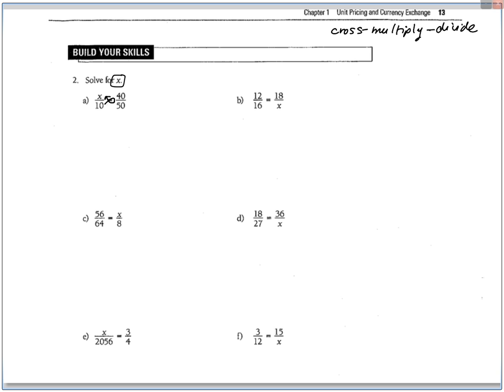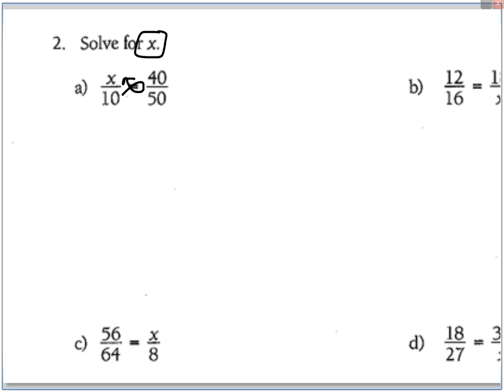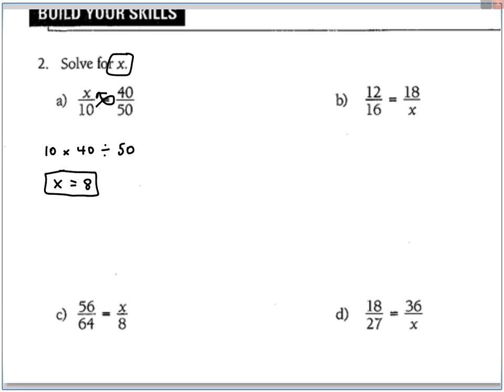And what we do is we draw a little picture on the equation to help us. So I drew like a little fish symbol. And what I ended up doing is timesing the two numbers that are across from each other. So 10 times 40, and then you always divide by the number across from x. So 10 times 40 divided by 50, and this will come out to 8. 8 is the missing piece. You can write it like this: x equals 8.